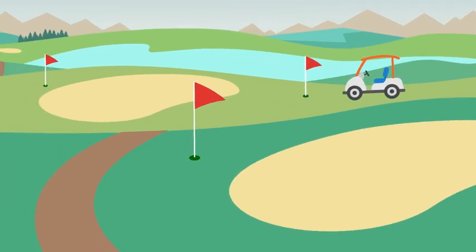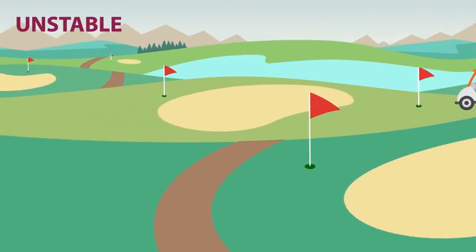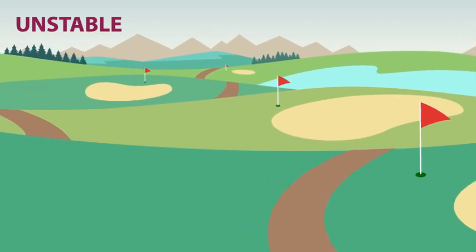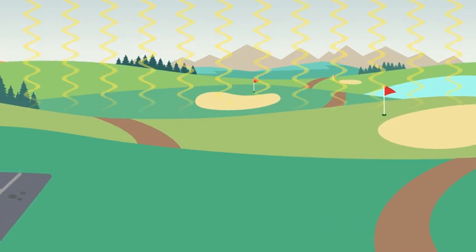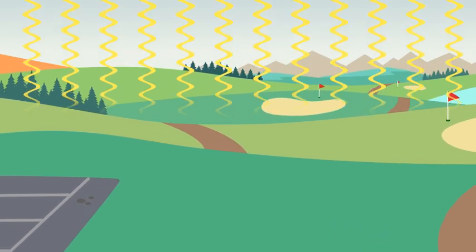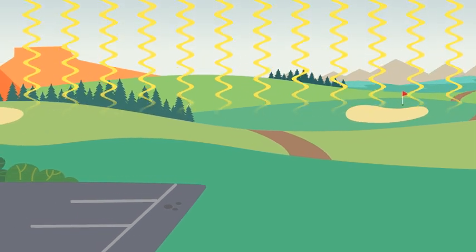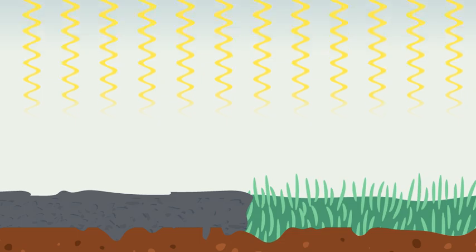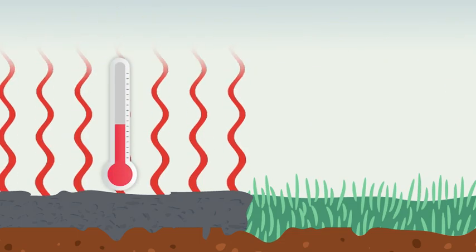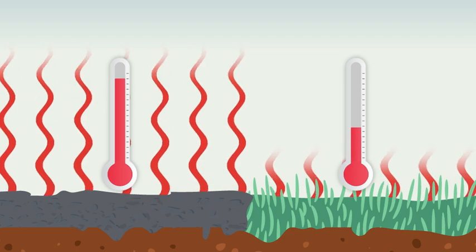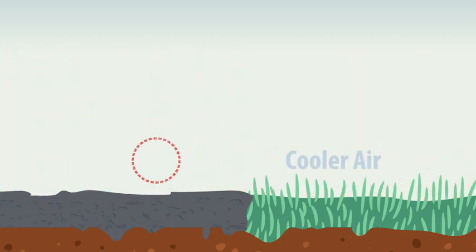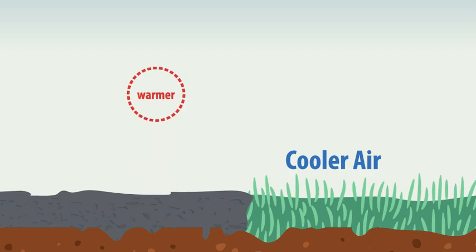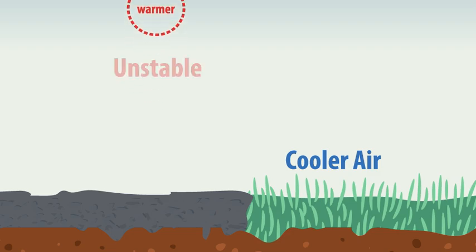We will start with describing unstable conditions. Recall that the Earth's surface is the air's source for nearly all heating and cooling. Strong solar radiation can heat the ground, creating a near-surface unstable layer of air. Envision a dark parking lot in the middle of a green irrigated golf course. The air in contact with the parking lot will warm much quicker and to a higher temperature than the air in contact with the surrounding green grass.